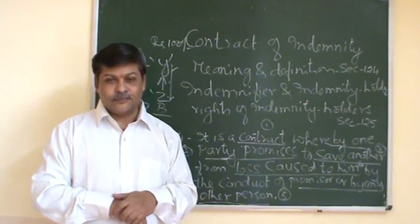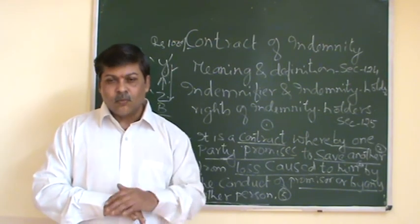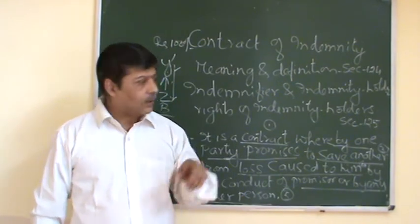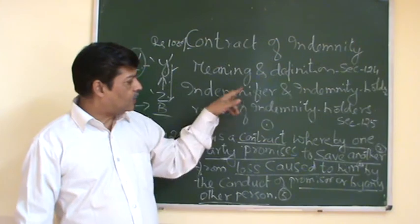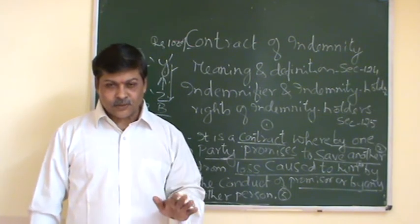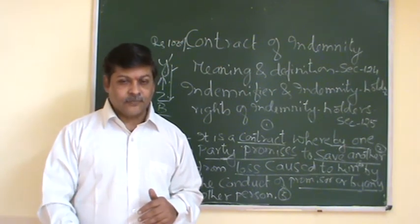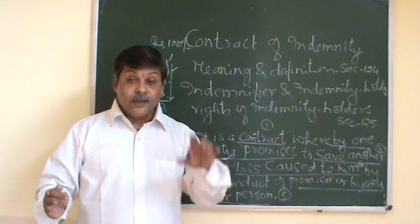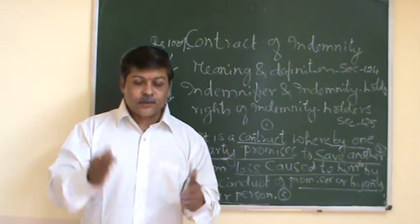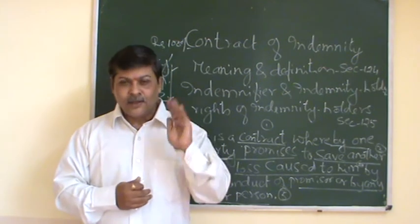To summarize, from section 124 you can find three important two-marks questions: what is contract of indemnity; who is an indemnifier; and who is an indemnity holder. These are the three questions to prepare for two marks in your examination.